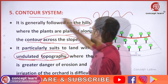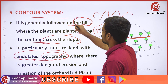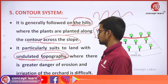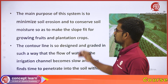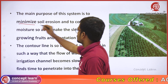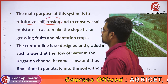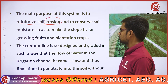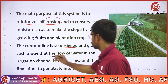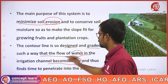We can say, for hill areas, the counter/contour planting system is followed. The main purpose of this system, as earlier discussed, is to minimize soil erosion. The contour line is so designed and graded in such a way that the flow of water in the irrigation channel becomes slow.